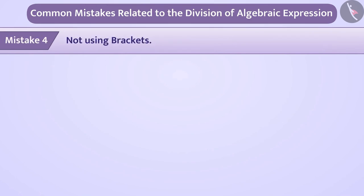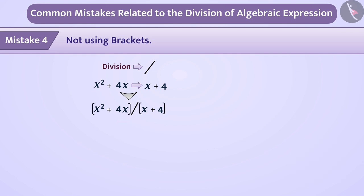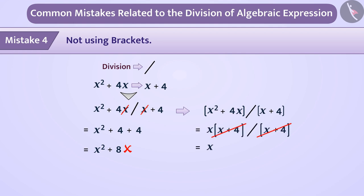Mistake four: not using brackets. Sometimes children use the division sign without brackets. For example, if asked to divide x squared plus 4x by x plus 4, they write it without brackets. This causes the reader to think only 4x is being divided by x, leading to confusion and mistakes. This can be overcome by using brackets correctly to obtain the right result.